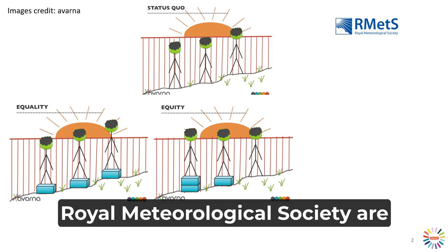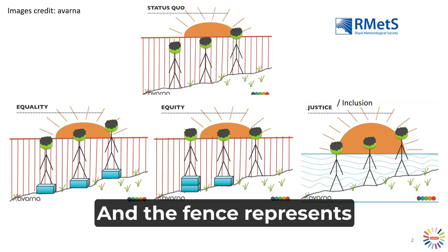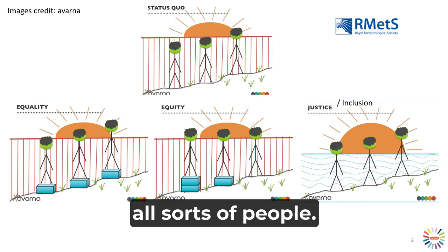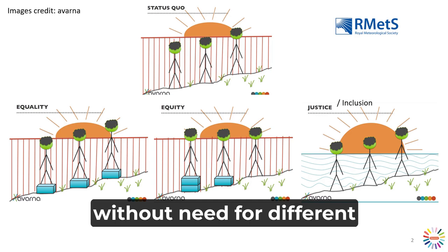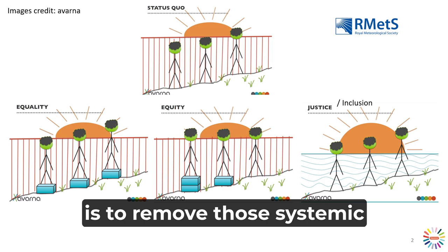The Science Council and the Royal Meteorological Society are taking an equitable approach to EDI. A final step would be to remove that fence altogether — the fence represents systemic disadvantages, advantages, and barriers for all sorts of people. If we take away that barrier, then everyone can see the sunset without need for different treatment or particular accommodations. This is what long-term actions around equity, diversity and inclusion are aiming for: to remove those systemic barriers.